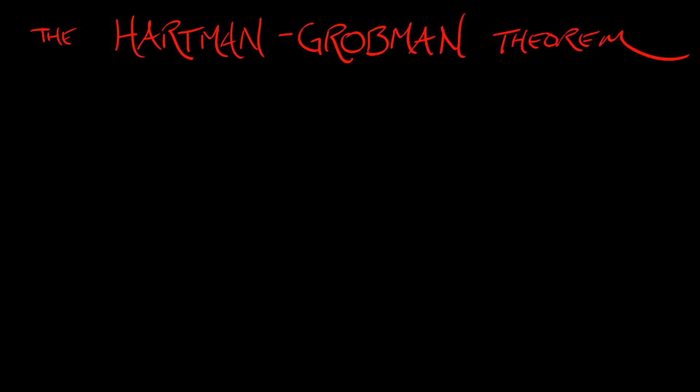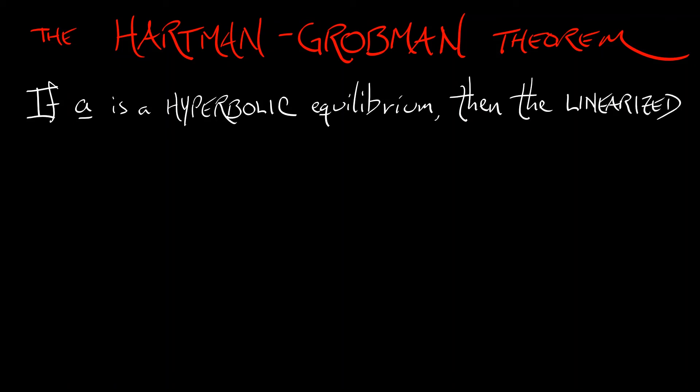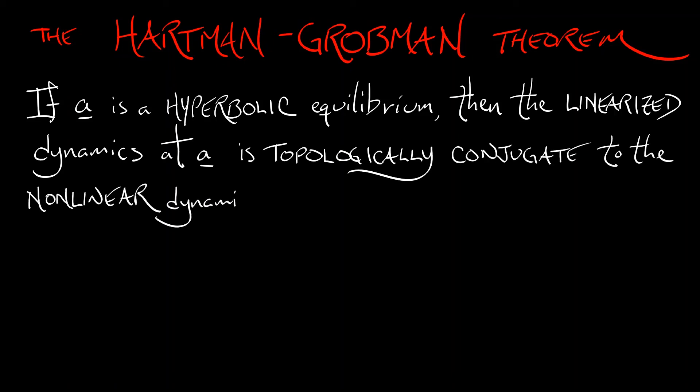Now with all of those definitions out of the way, we can finally get to the result, the big result. The theorem, the Hartman-Grobman theorem, says the following: if A is a hyperbolic equilibrium, then the linearized dynamics at A is topologically conjugate to the full nonlinear dynamics of your original system on some neighborhood of A.